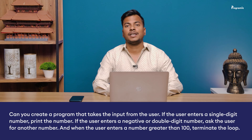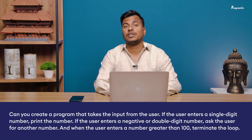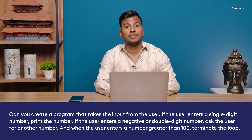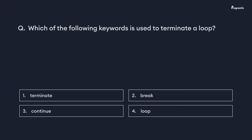Now to practice what we've learned, here's a programming task for you: Can you create a program that takes input from the user? If the user enters a single digit number, print it. If the user enters a negative or double digit number, ask for another number. And if the user enters a number greater than 100, terminate the loop. You'll find the answer in our GitHub repository — I'll put the link in the video description. Now it's time for the programming quiz: which of the following keywords is used to terminate a loop? Terminate, break, continue, or loop? Comment your answer below. Happy programming!